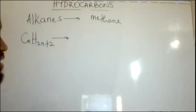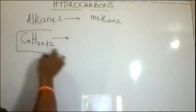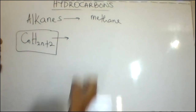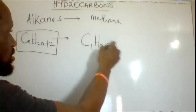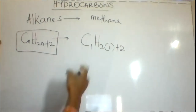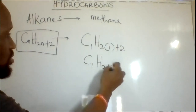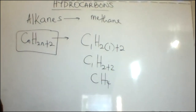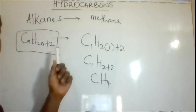Methane is the first member of the alkane series. Being the first member, the general formula CnH(2n+2) is applied: C1H(2×1+2) = C1H4, giving us CH4. CH4 is the molecular formula for methane.